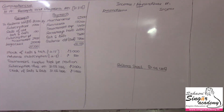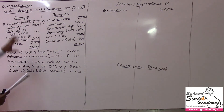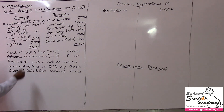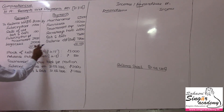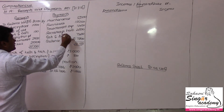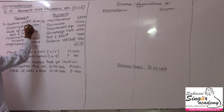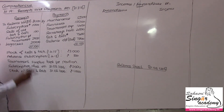As already told, we have to follow the same strategy here. The adjustments are: stocks of balls and bats, advance subscription, and tournament surplus kept for pavilion construction.